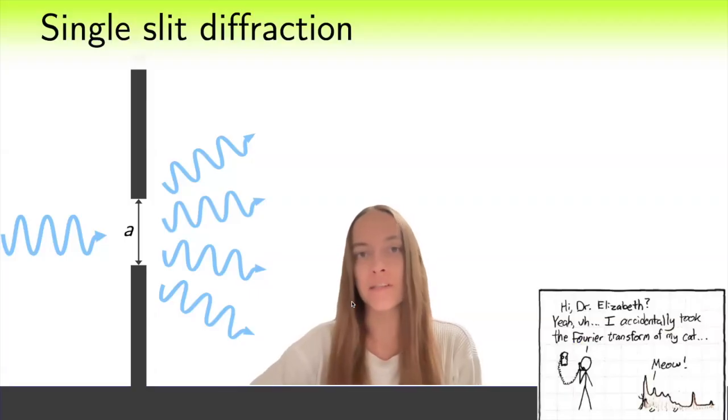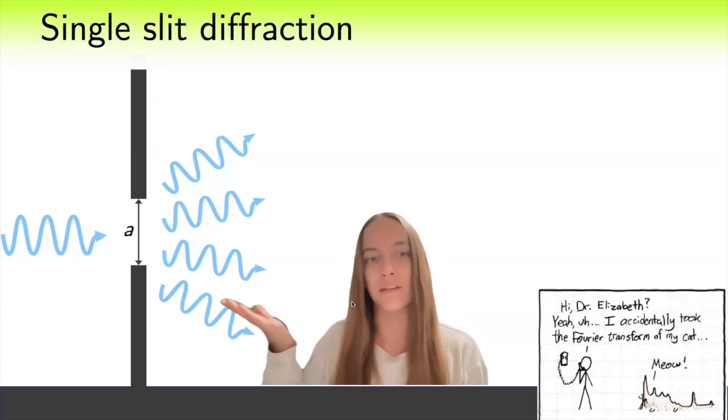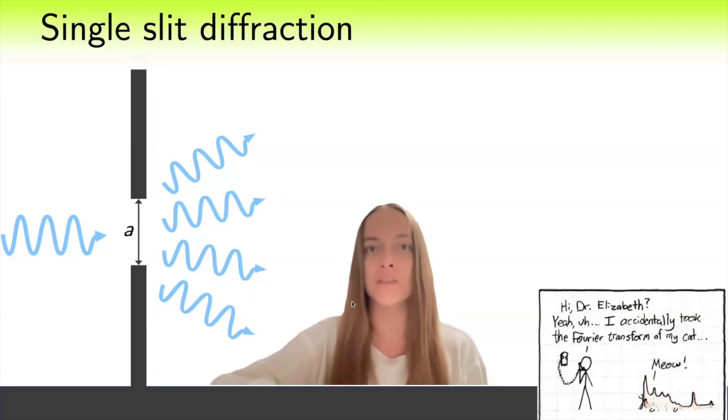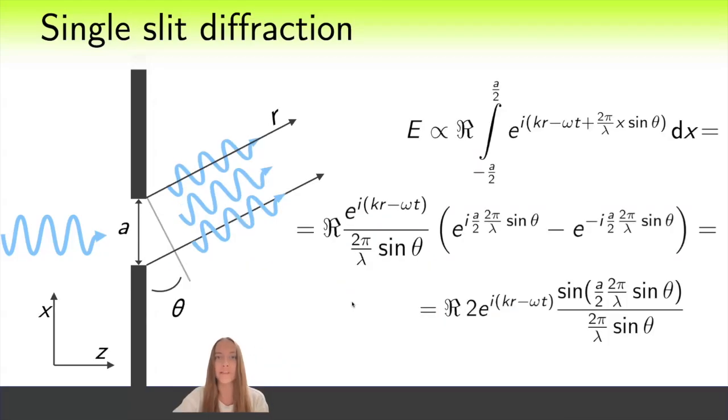We will think of the wave at the output as a combination of different plane waves with different directions and amplitudes. Let us try to find the amplitude of one of them, propagating at the specific angle theta. To find the amplitude of such a wave, we need to sum all the waves coming from the open points of the wavefront.